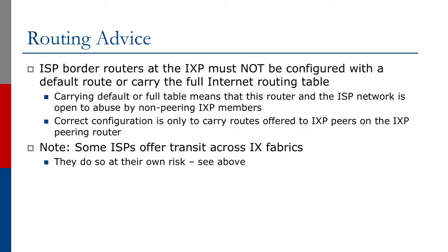Let's have a look at some of the routing setup that operators need to consider at exchange points. The ISP border routers at the exchange point must not be configured with a default route or carry the full internet routing table. Carrying the default or the full table means that this router and the ISP network is open to abuse by non-peer exchange point members. The correct configuration is only to carry the routes offered to IXP peers on the IXP peering router. Do note that some ISPs offer transit across IX fabrics — they do so at their own risk.